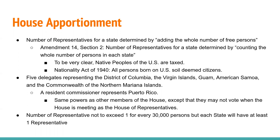Furthermore, the 14th Amendment, Section 2, stated that representatives shall be apportioned according to their respective numbers, counting the whole number of persons in each state — though still excluding Indians not taxed. The 14th Amendment came about after the Civil War. Let's be clear that Native peoples of the United States are taxed. The Nationality Act of 1940 further established that all persons born on U.S. soil, including Native populations, were deemed citizens.